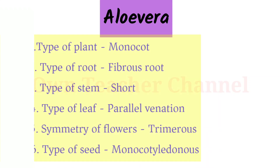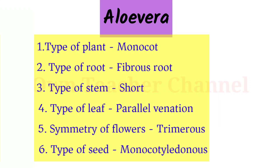Aloe vera — Type of plant: monocot. Type of root: fibrous root. Type of stem: short. Type of leaf: parallel venation. Symmetry of flowers: trimerous. Type of seed: monocotyledonous.